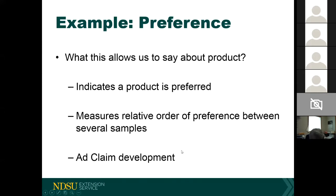In the 1970s and 80s, Coke and Pepsi did taste tests where one product was claimed to be preferred over another. However, if you want to make an ad claim, the sensory evaluation must be done by a third party — they conduct the test and report back what product was preferred. You can use preference for an ad claim, but only if a third-party laboratory actually conducts the test.